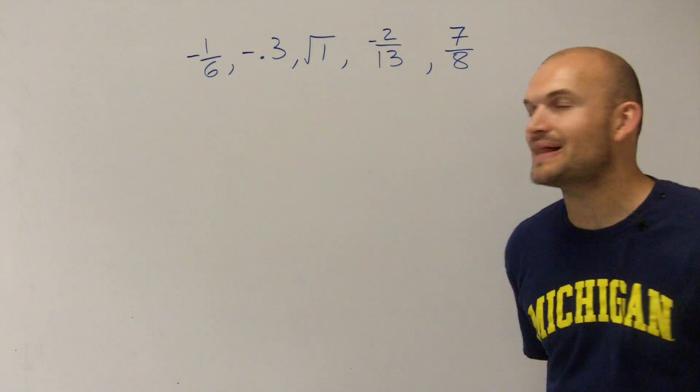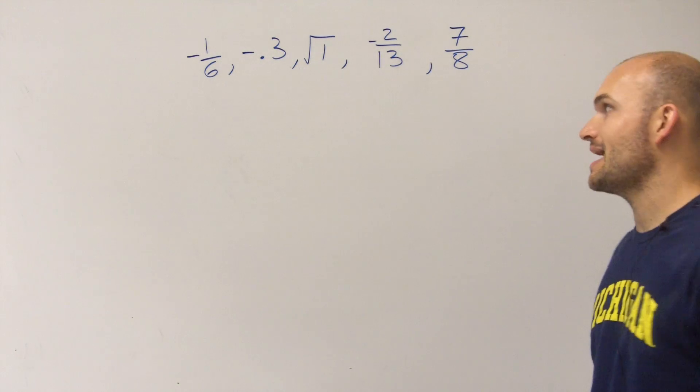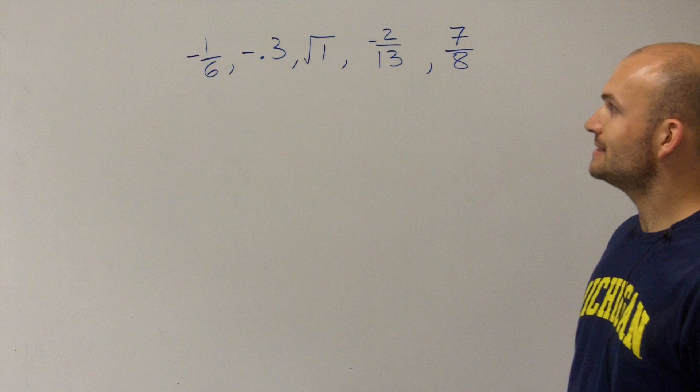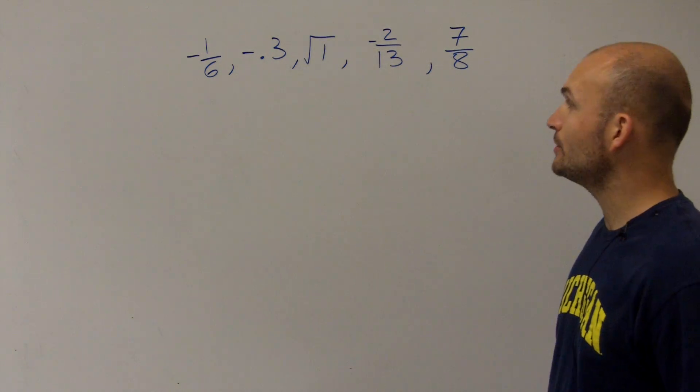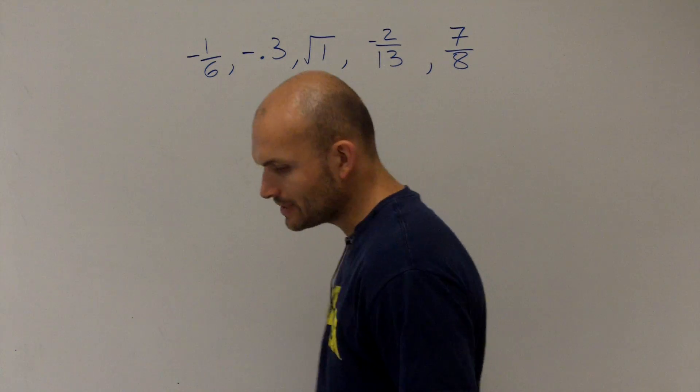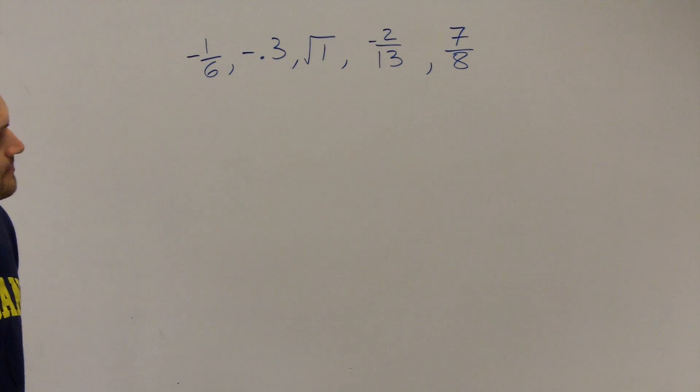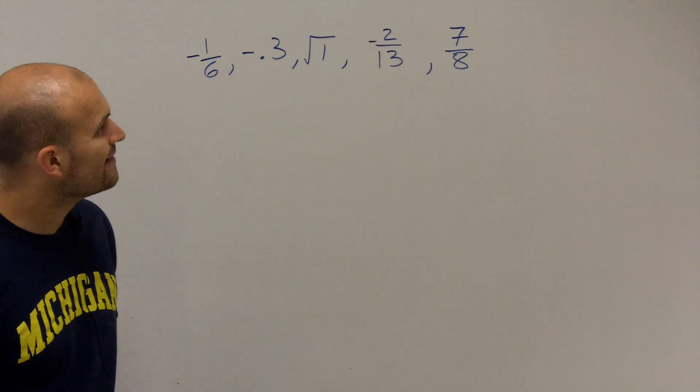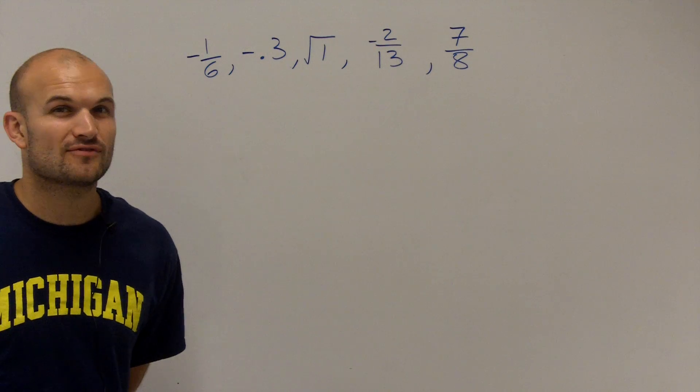So what we want to do is we want to classify these numbers. So what I have is negative 1 sixth, negative 0.3, the square root of 1, negative 2 thirteenths, and 7 eighths. So what you guys should notice by looking up here is we have some numbers all in different forms.